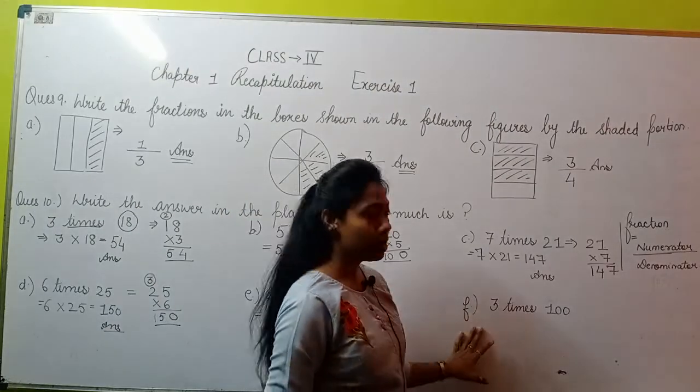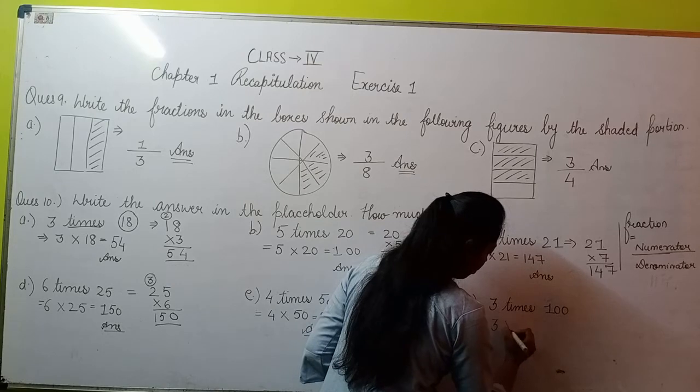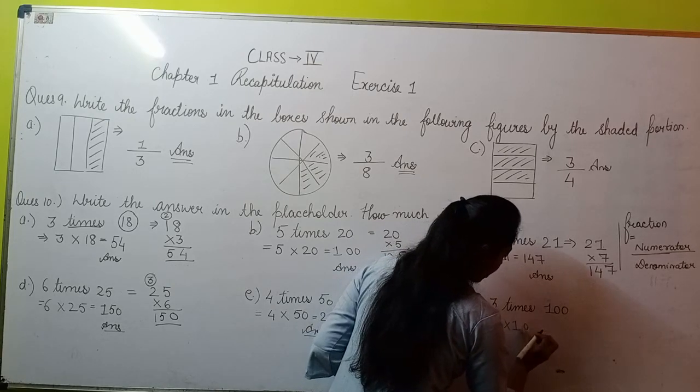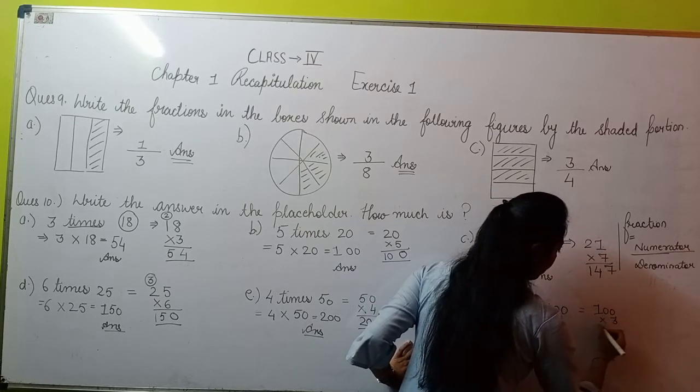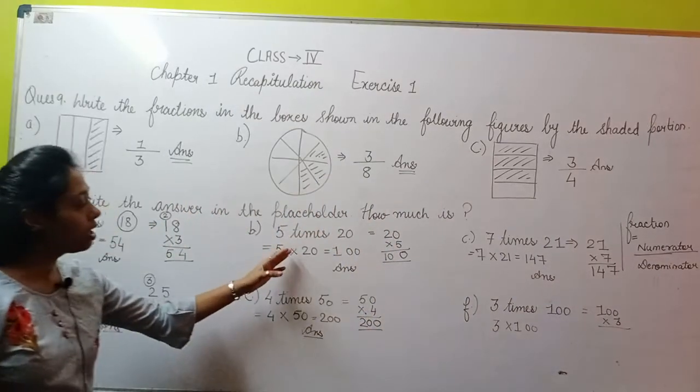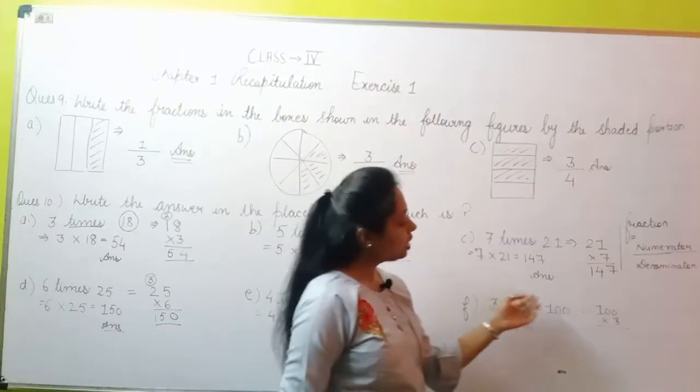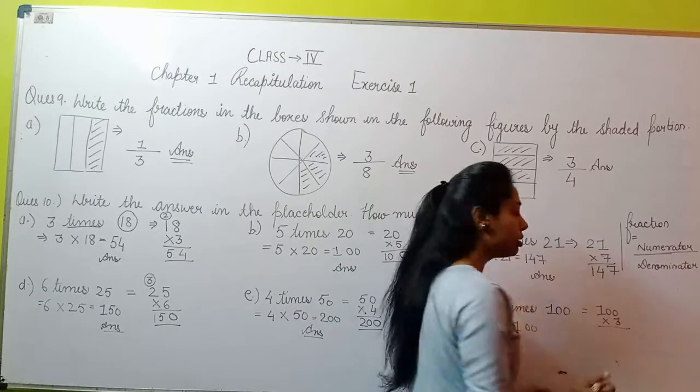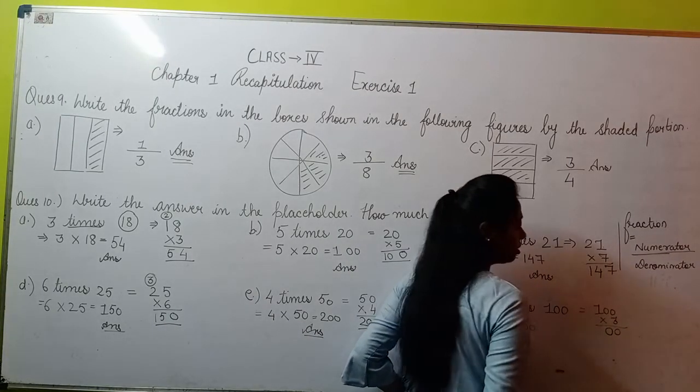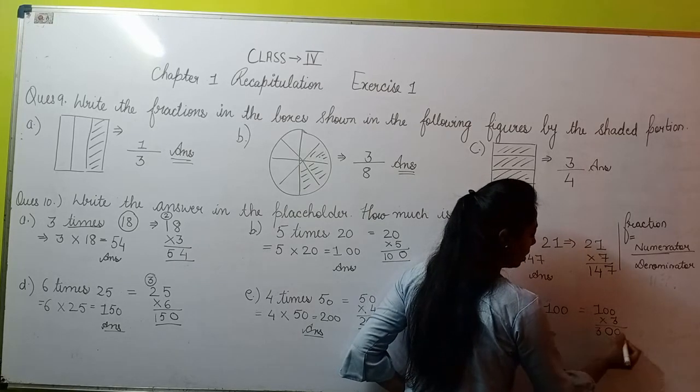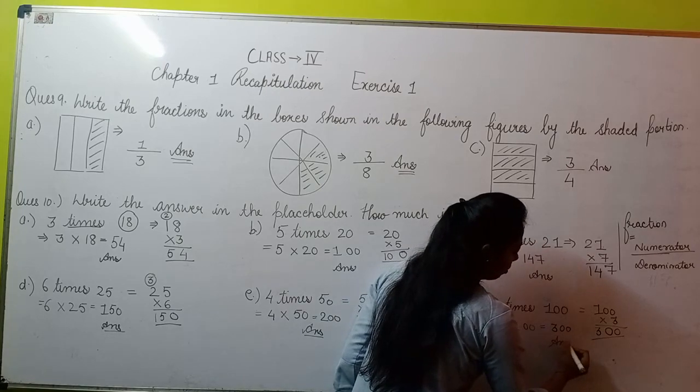Now the last part of this question, F part. F part given is 3 times 100. We'll see 3 multiplied by 100. Let's solve this: 100 into 3. Again, the concept we used in two questions—when we multiply by 0, the answer is 0. 1 into 3 is 300. So 3 into 100 is 300. This is your answer.